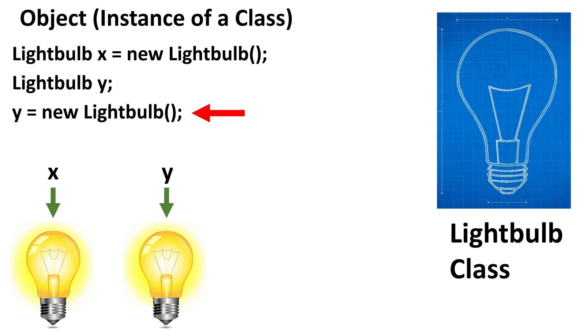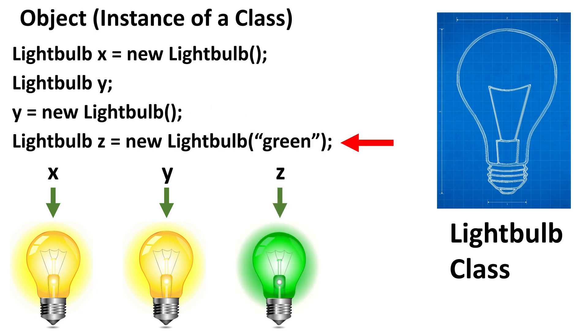Let's look at a third example. Here we declared a variable z and initialized it with a new lightbulb object. But you'll also see an additional piece of data. Anything inside the parentheses gets passed to the constructor and is used in the creation of the object. In this case, I passed the string green to the constructor, which caused the lightbulb's color field to be set to green.